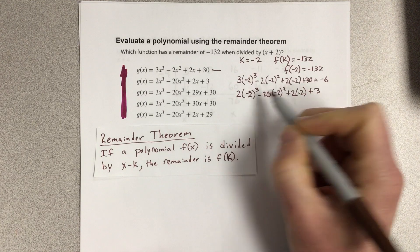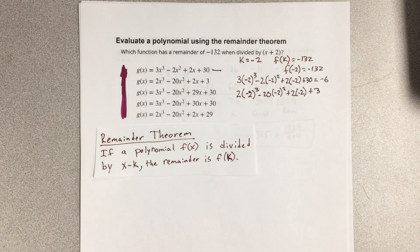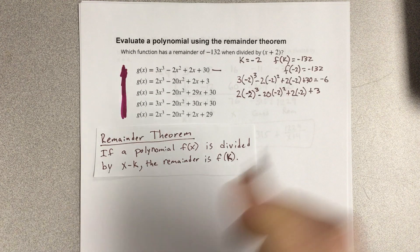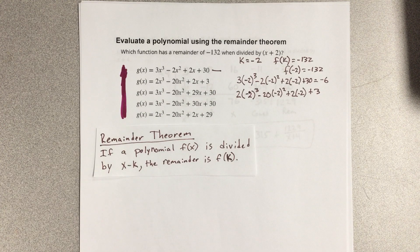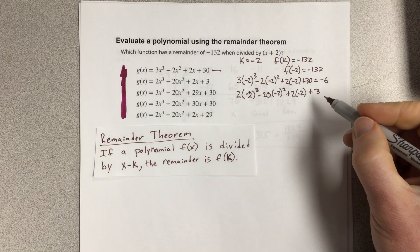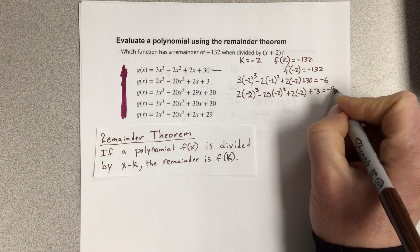So, negative 2 cubed is going to be negative 8 times the 2 is negative 16. So we have negative 16. This would be 4 times this, that's negative 80 minus 4 and then plus the 3 you get negative 97 which again is not negative 132.